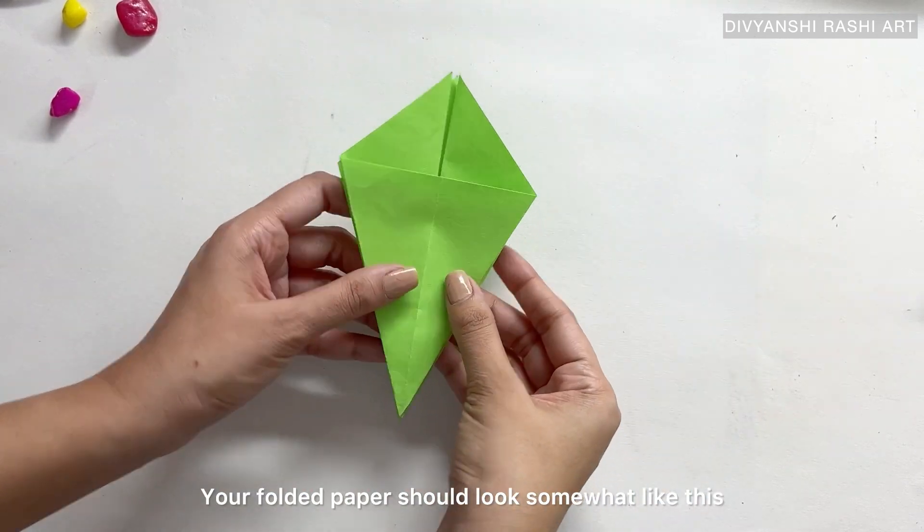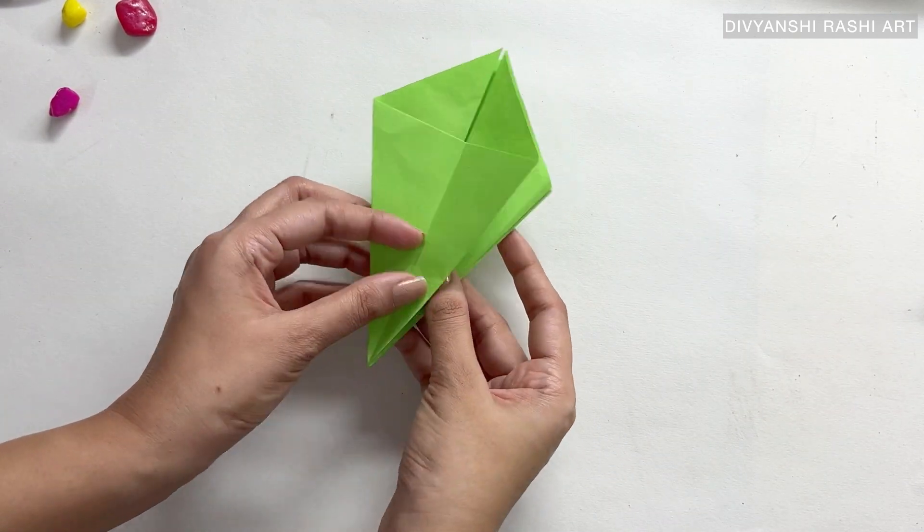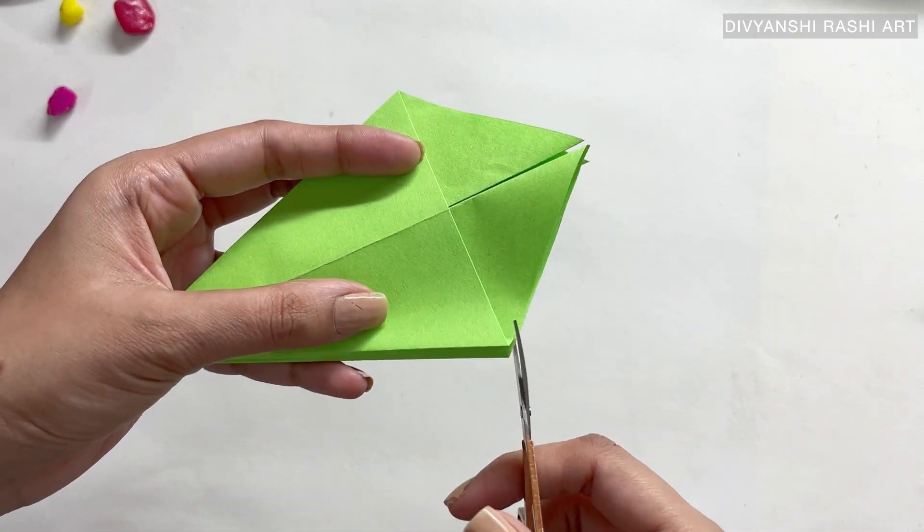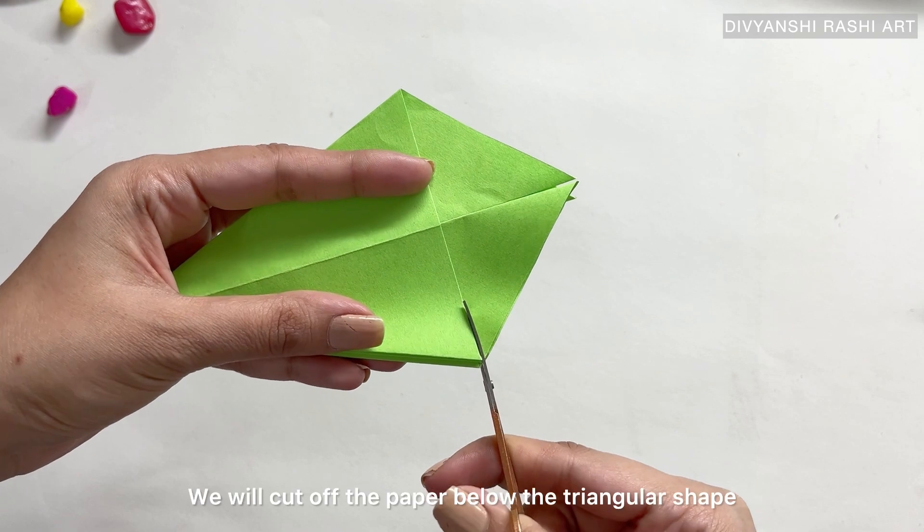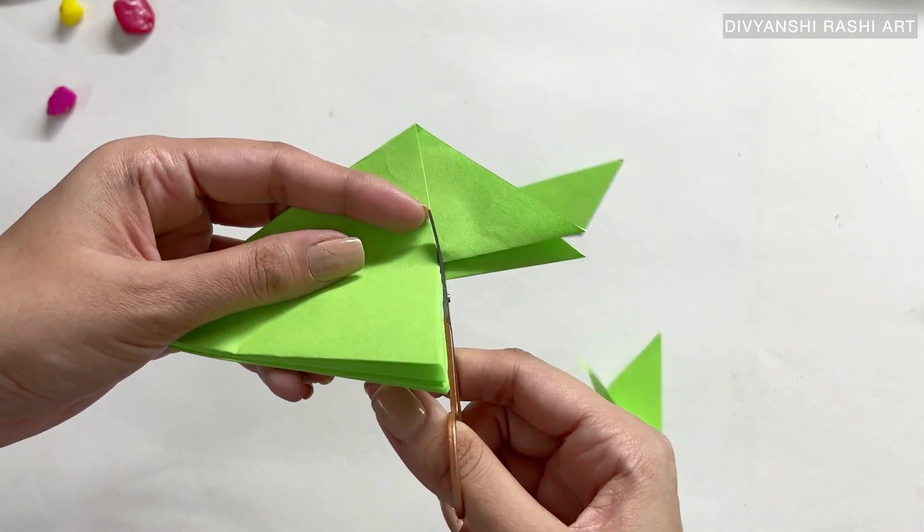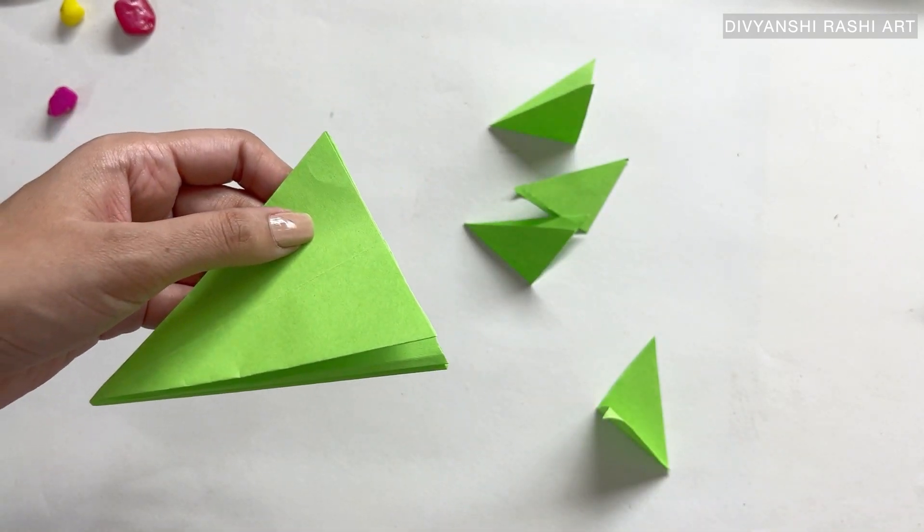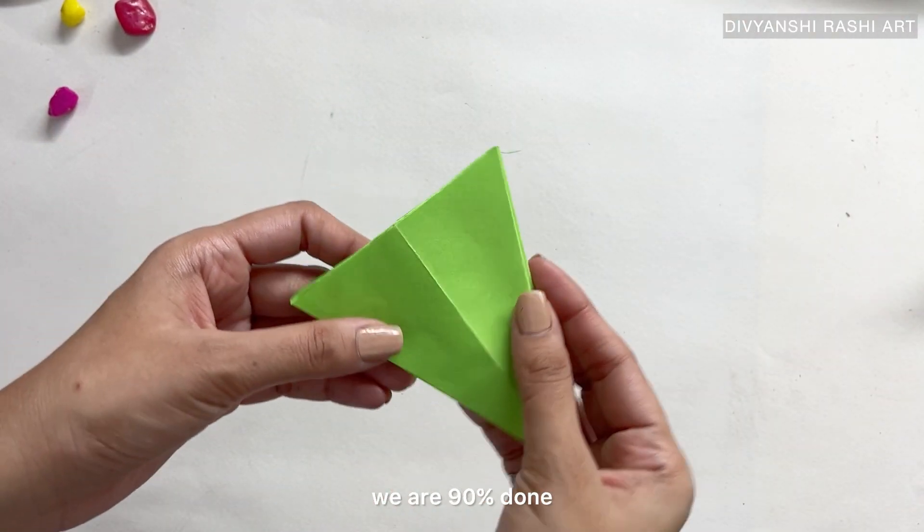Your folded paper should look somewhat like this. This is almost the final stage. We will cut off the paper below the triangular shape, and there you go—we are 90 percent done.